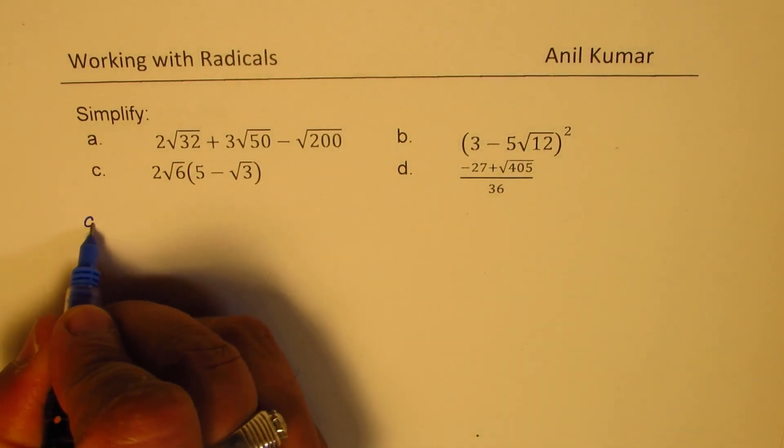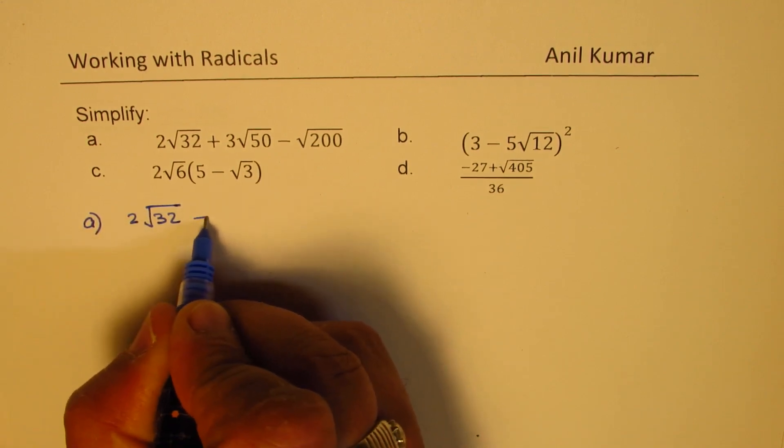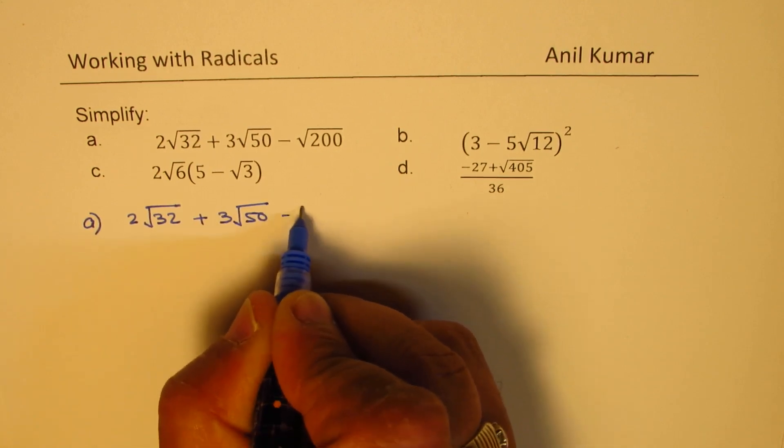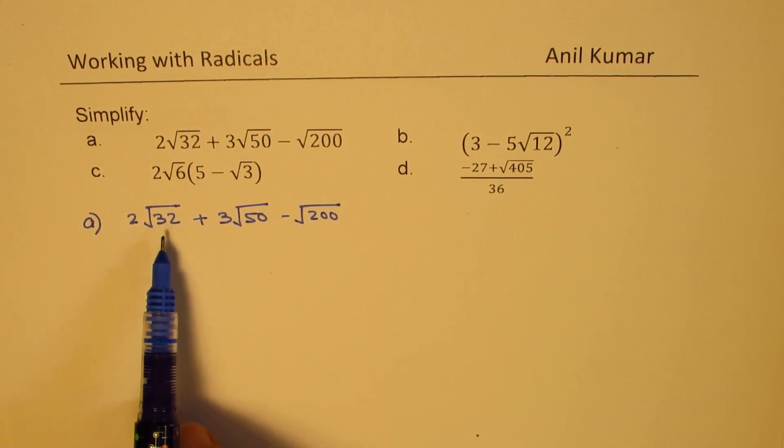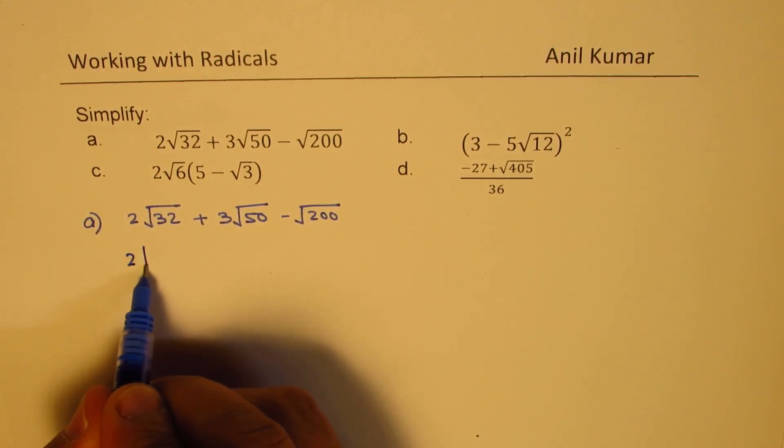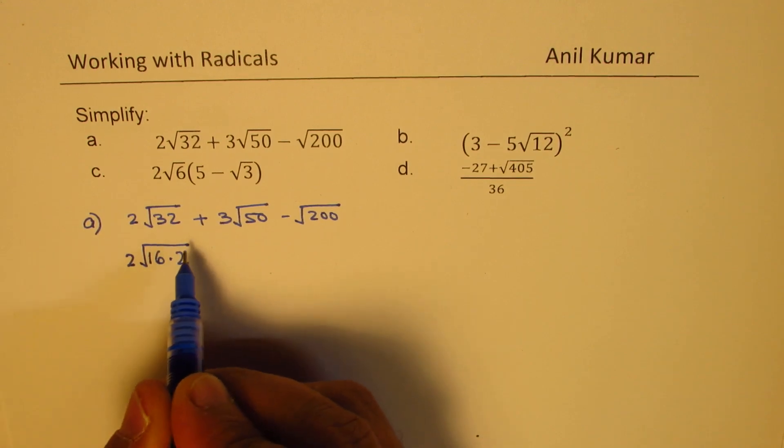So let's begin with part A, which is 2√32 + 3√50 - √200. Now, working with radicals is to always look for factors in which one of them is a perfect square. So 32, for example, can be written as 16 times 2. I use 16 because 16 is 4 square. Perfect.